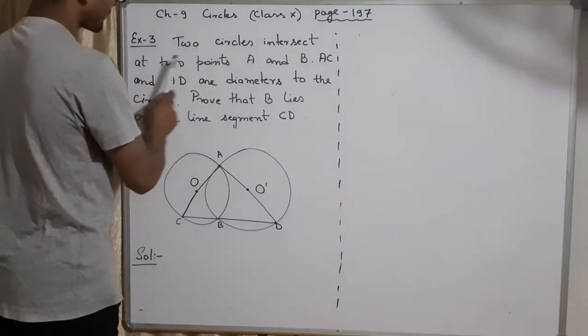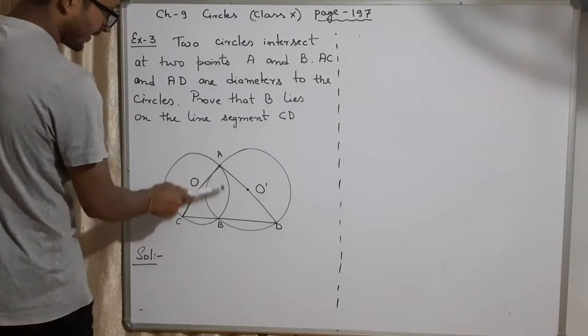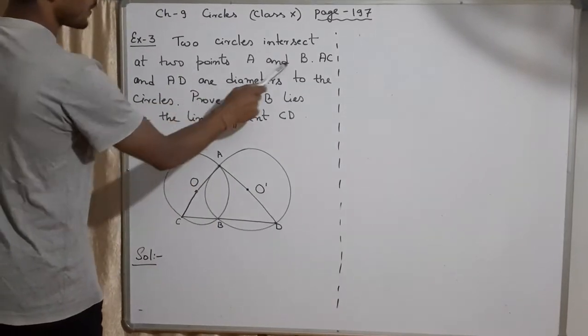The two circles intersect at two points. There are two circles, this circle and this circle. They intersect at A and B, two points, A and B, clearly written.